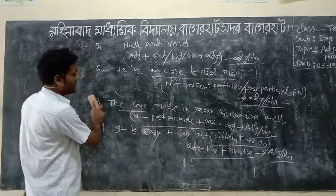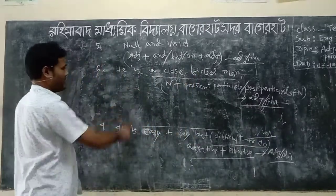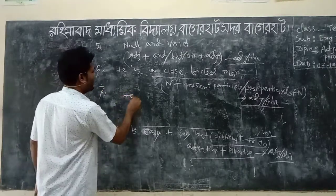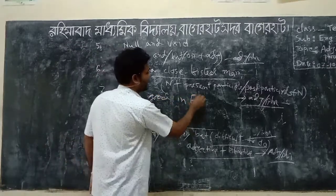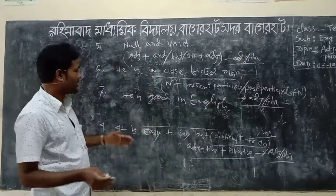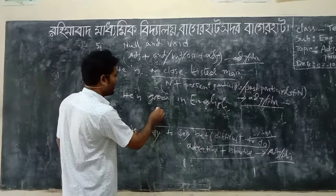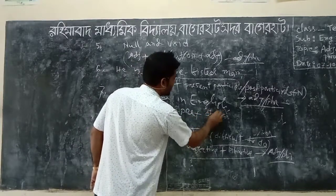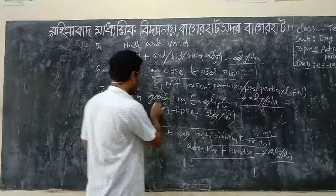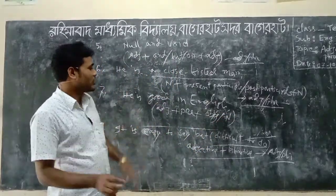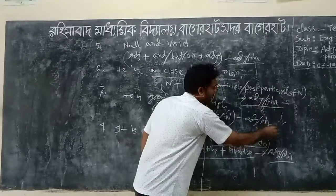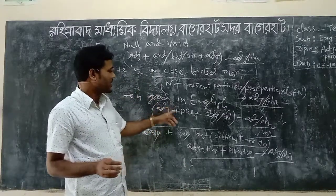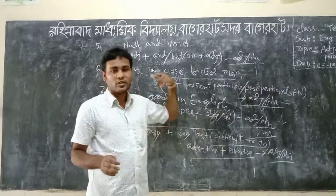The next sentence is: 'He is good in English.' 'Good in English' is the adjective phrase. The structure is: adjective (good) plus preposition (in) plus object or noun (English). Adjective plus preposition plus object or noun forms an adjective phrase.